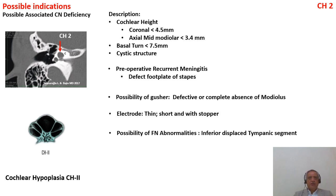We re-emphasize that in all conditions under possible indications, there is a possibility of cochlear nerve deficiency. In all cochlear hypoplasias, there are also abnormalities of the facial nerve — here it can be found as an inferiorly displaced tympanic segment — making surgery more difficult. You must always look for cochlear nerve size in these conditions.